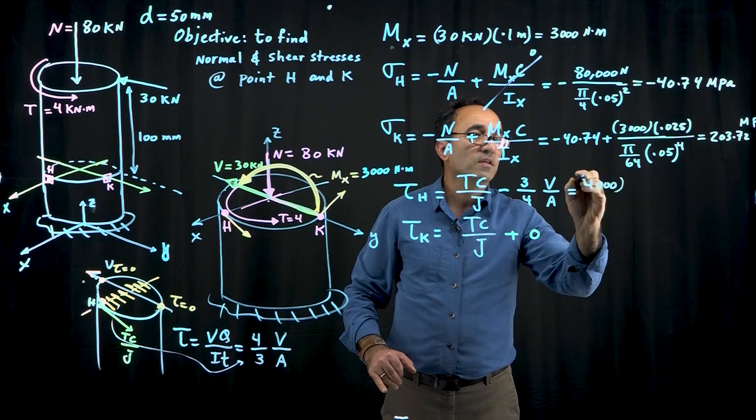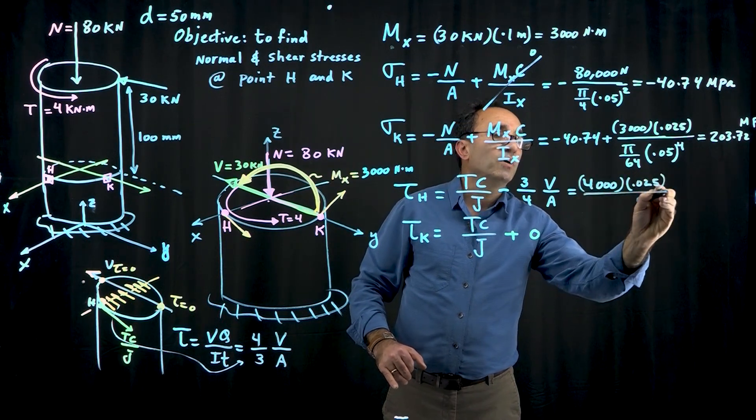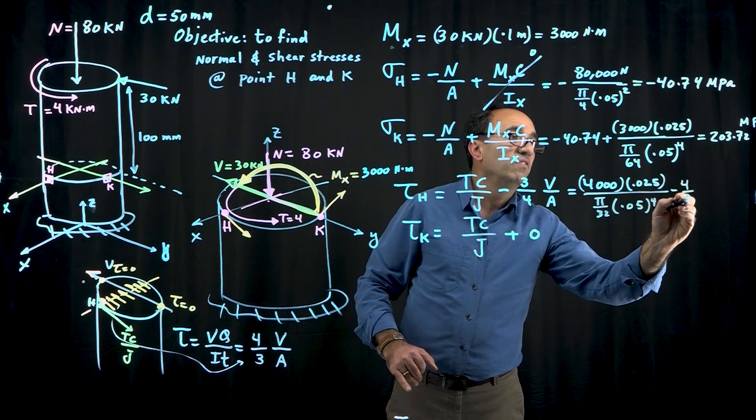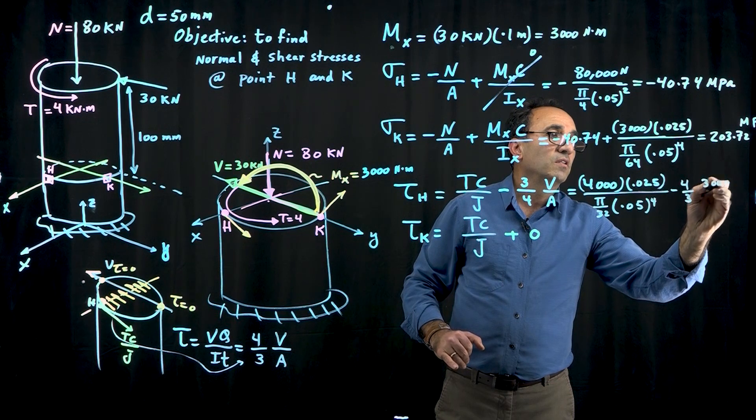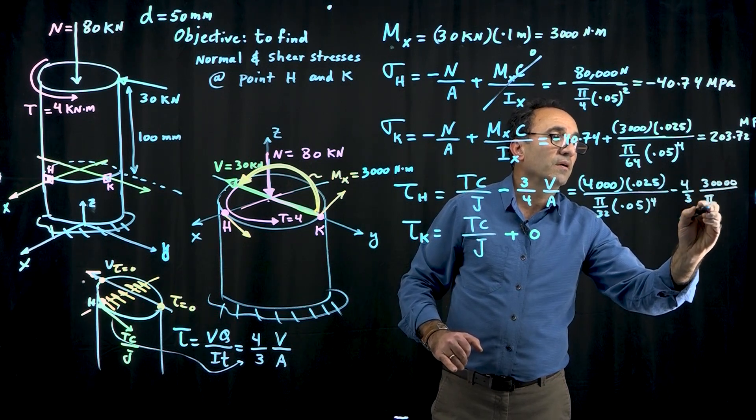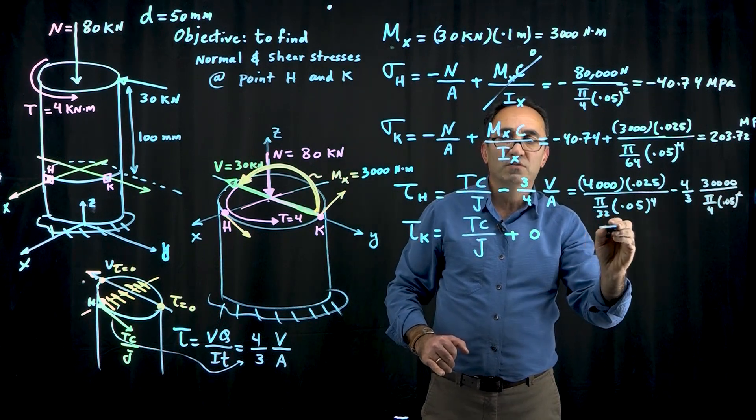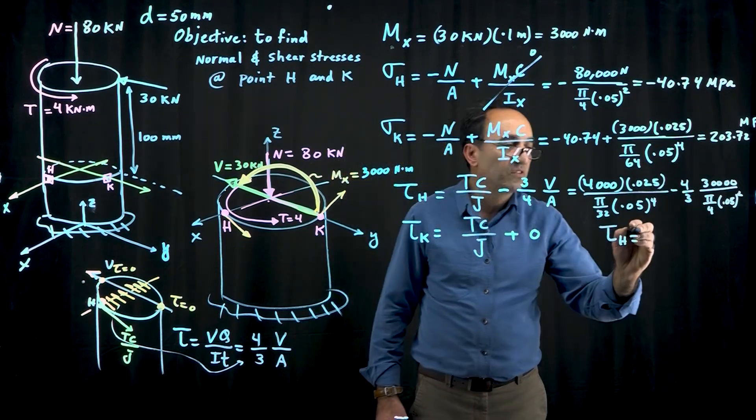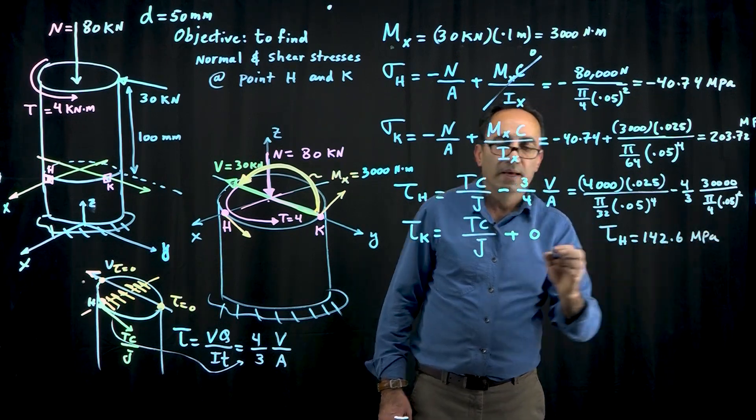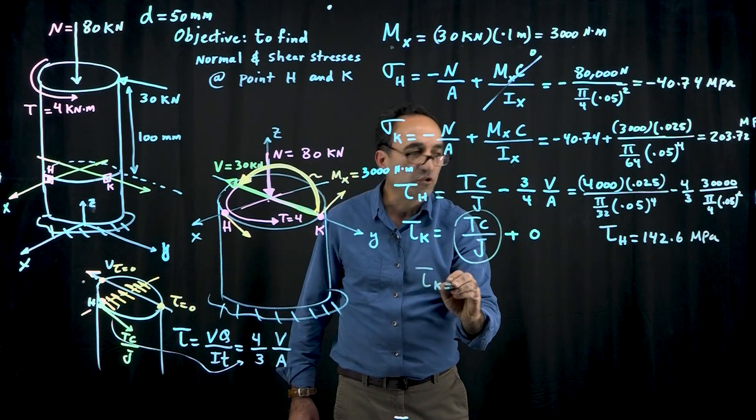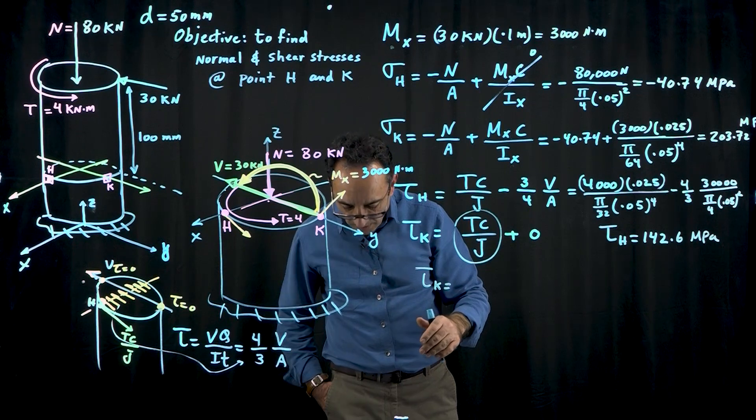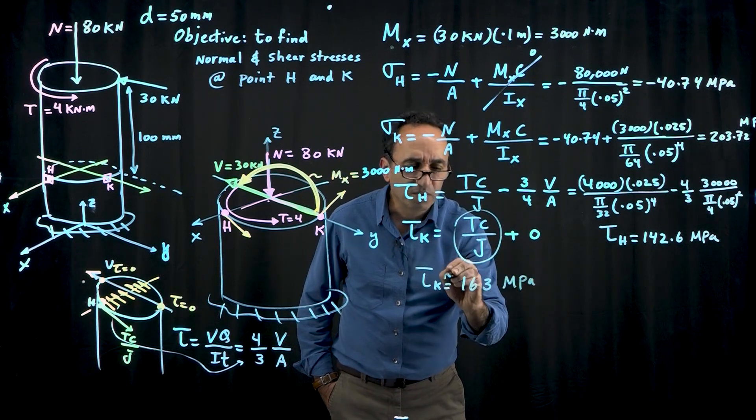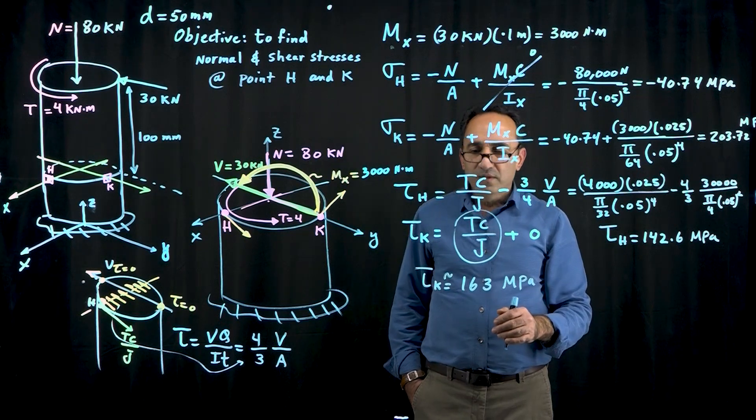Let's plug in the numbers. The torque is 4000, c is the radius, J is pi over 32 times diameter to the fourth, minus 4/3 times V which is 30 kilonewtons divided by area. Tau at H comes out to about 142.6 megapascals. Tau at K with just the torsional term is approximately 163 megapascals.